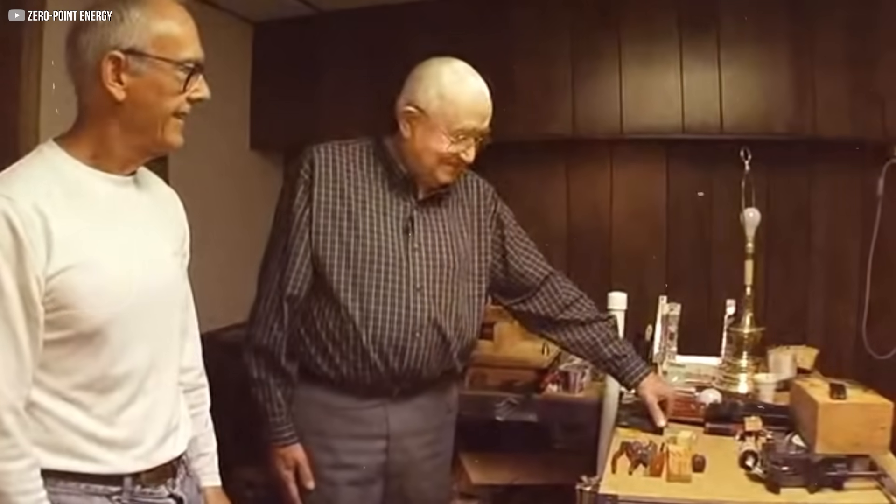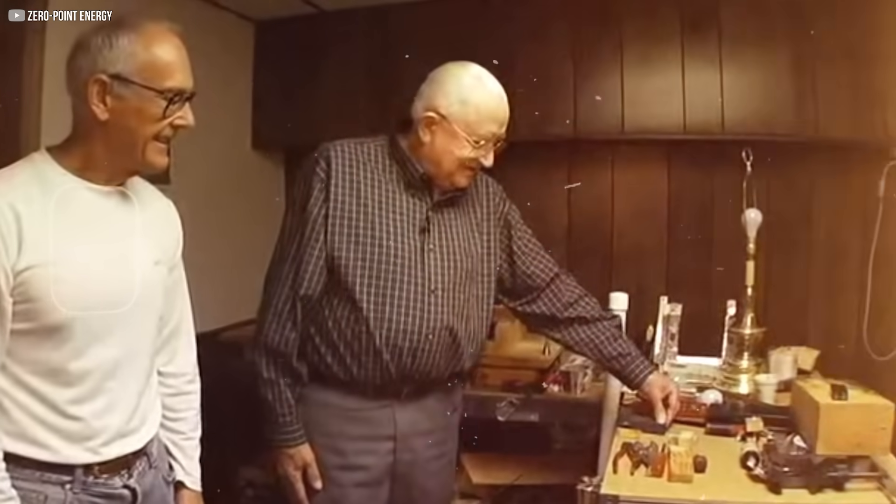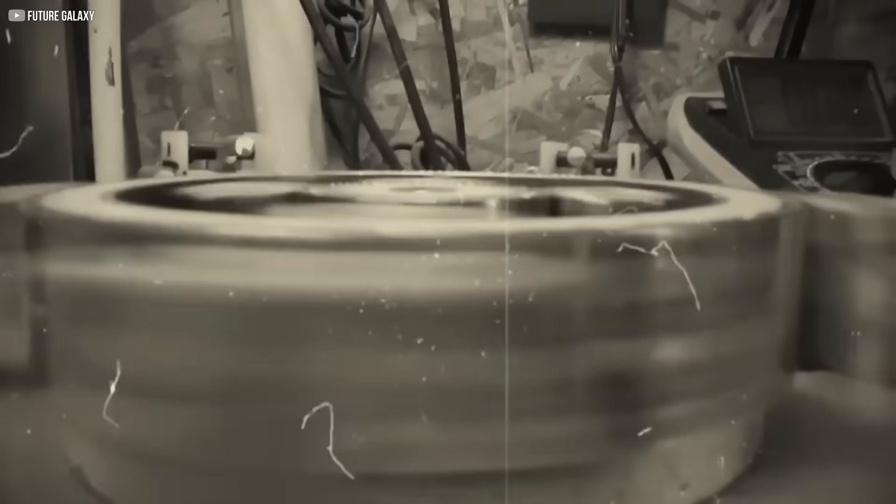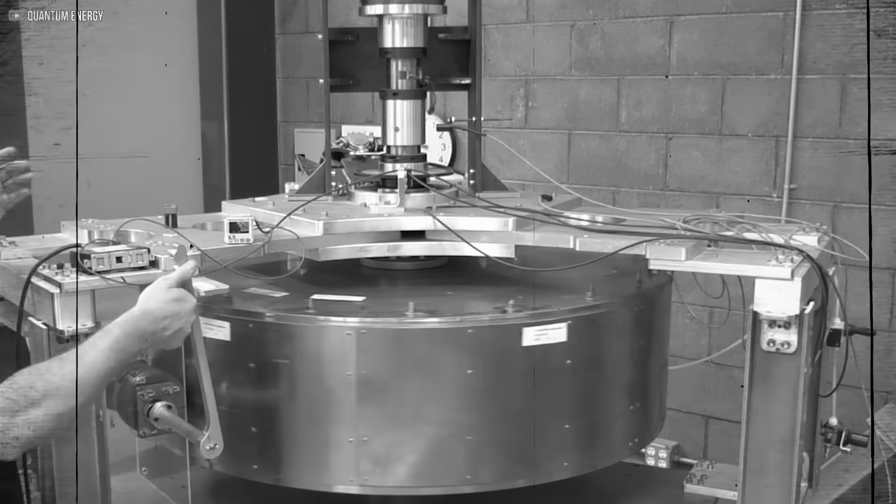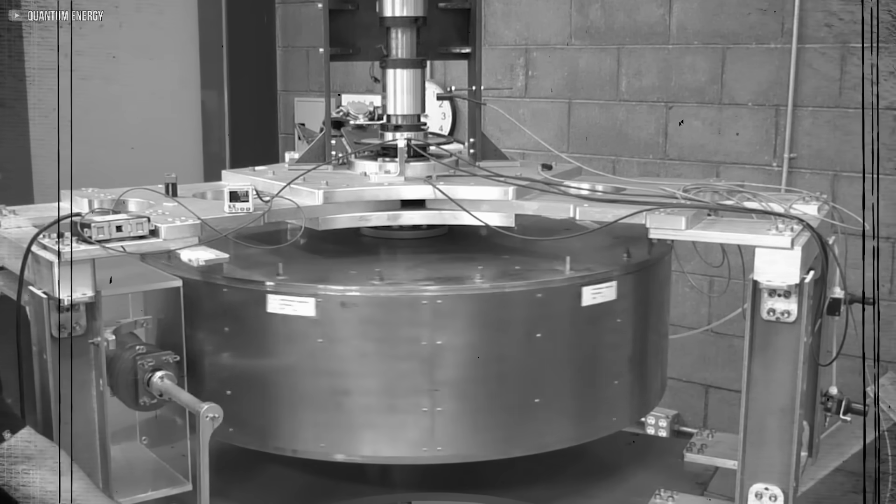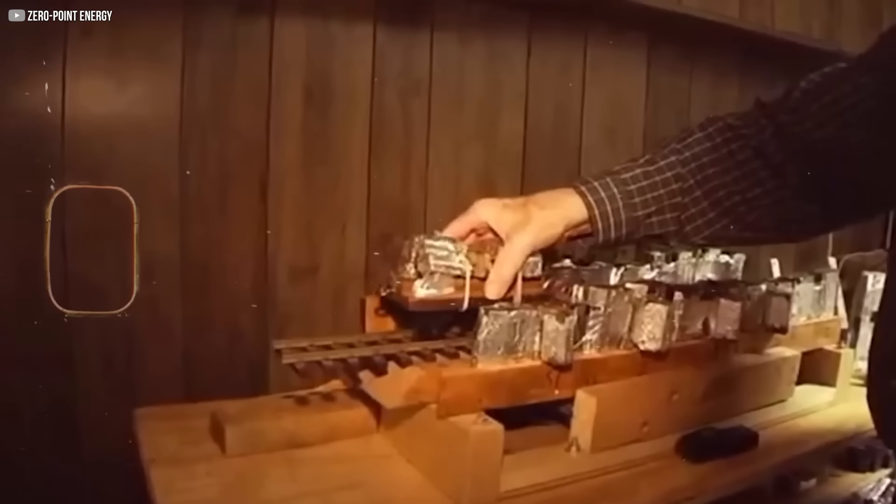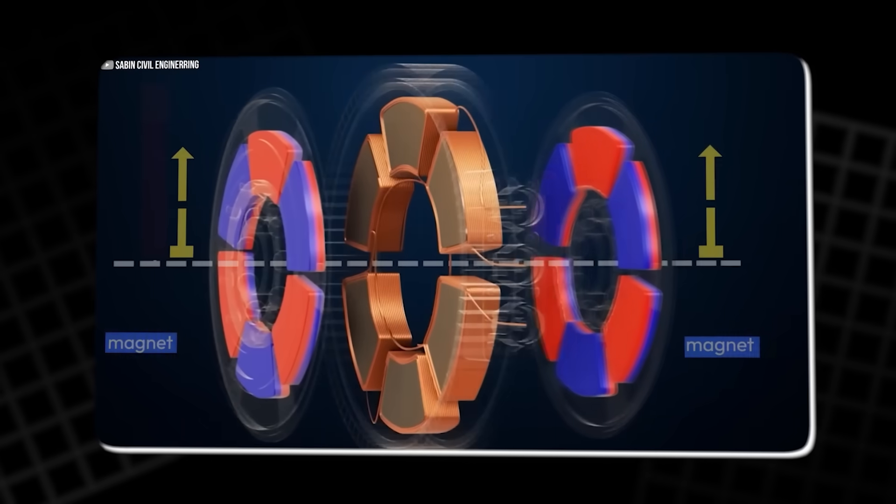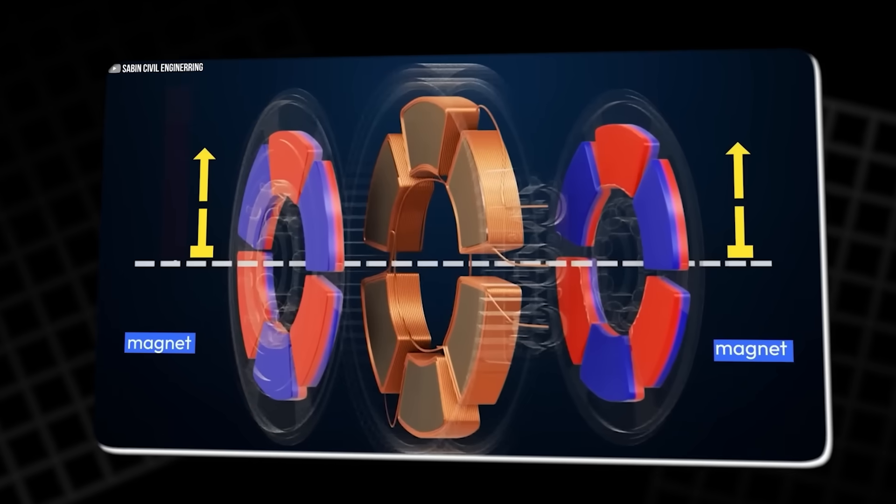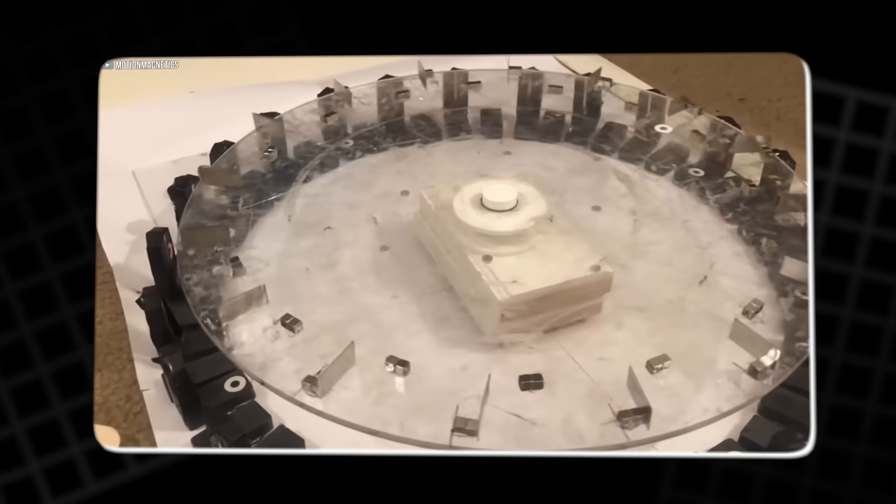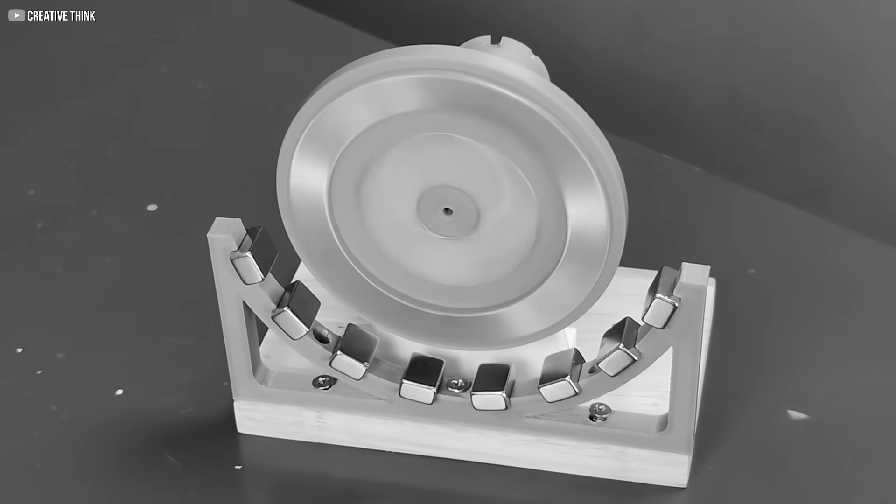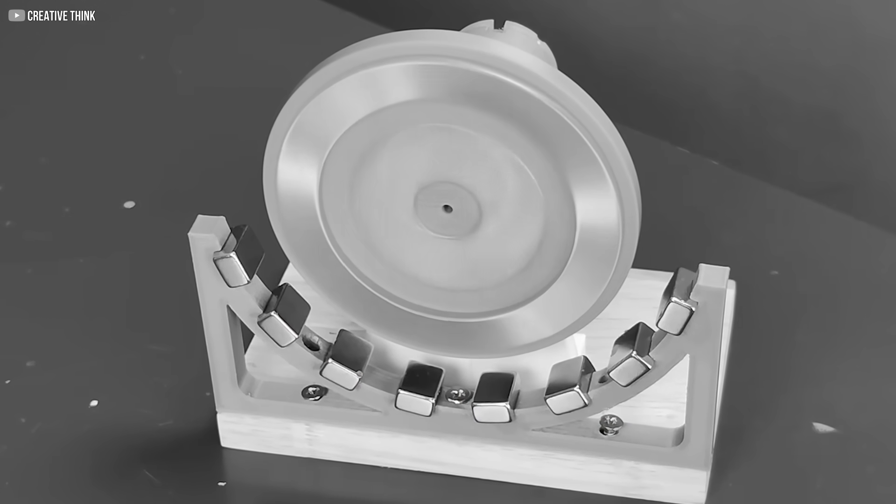The machines that could change everything. Howard Johnson didn't stop at one device. He created a family of machines, each building on the last, each more powerful, more refined. His second invention, the permanent magnet motor, took the concept further. Using a precise arrangement of angled magnets, Johnson developed what he called magnetic gates. These gates allowed the rotor to move forward endlessly, with attraction and repulsion timed so perfectly that motion never stalled.